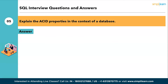The fifth question: explain the ACID properties in the context of a database. ACID stands for Atomicity, Consistency, Isolation, and Durability. These properties ensure that database transactions are processed reliably. Atomicity ensures the transaction is treated as a single indivisible unit. Consistency ensures a transaction brings the database from one valid state to another. Isolation ensures concurrent transactions do not interfere with each other. Durability ensures that once a transaction is committed, it remains committed even in case of a system failure.